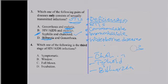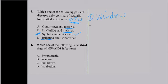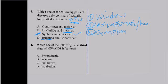The next question asks: 'Which of the following is the third stage of HIV and AIDS infection?' The stages of HIV and AIDS are: Stage 1 — the window stage; Stage 2 — the asymptomatic or incubation stage; Stage 3 — the symptomatic or symptom-showing stage; and Stage 4 — the full-blown AIDS stage.